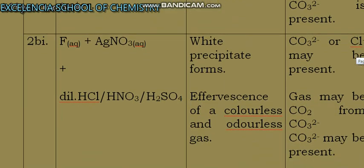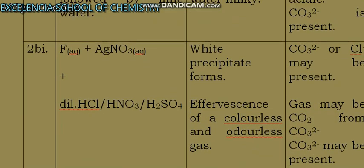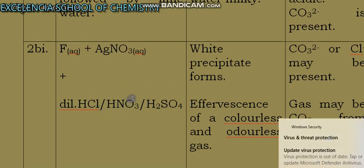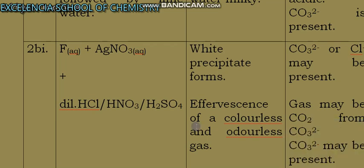Alternatively, you might be asked in place of barium chloride to add silver nitrate aqueous. Adding silver nitrate aqueous, you see the same white precipitate, but this time you write that carbonate or chloride ion may be present.